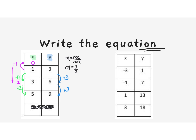Over here, a similar situation — y was increasing by three. Using that same logic on the y side, we divide by two: three divided by two is one and a half. So if we subtract 1.5 from three, we get 1.5. Our equation here would be y equals three halves x plus 1.5.